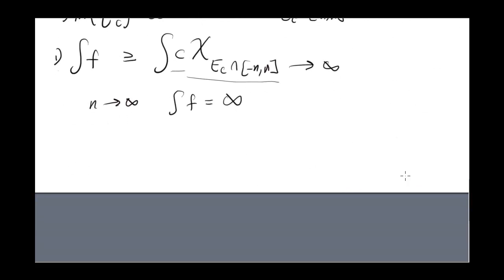For the second part of the proof, observe that the function c times the chi function, the characteristic function of E sub c, is less than or equal to f.